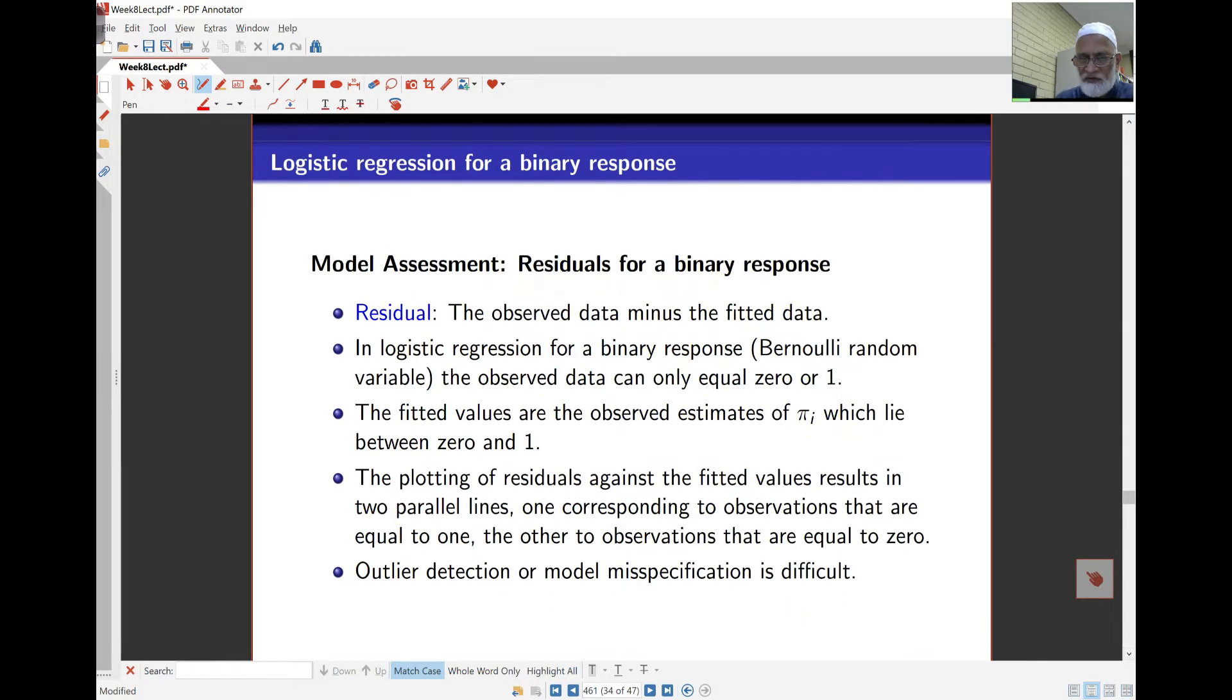Model assessment for binary responses. Now the residual here is the observed minus the fitted. In the case of logistic regression, when the observed values are 0 or 1, and the fitted values are estimates of pi_i which lie between 0 and 1, plotting residuals, the raw residuals, which is the observed minus expected—in this case the observed is either 0 or 1 and the expected is pi_i—you will get two parallel lines. And in fact, you cannot detect any outliers because the numbers all lie on the two straight parallel lines.